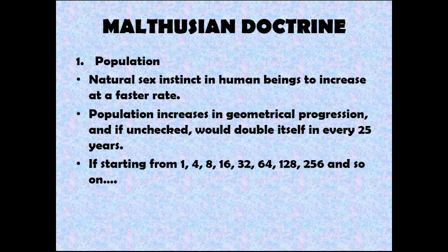The Malthusian doctrine is based on two doctrines. The first doctrine is population. There is a natural sex instinct in human beings to increase at a faster rate. Population increases in geometrical progression, and if unchecked, it would double itself every 25 years. So starting from one, in the next 25 years it becomes 2, then 4, then 8, then 16, then 32, then 64, and so on.